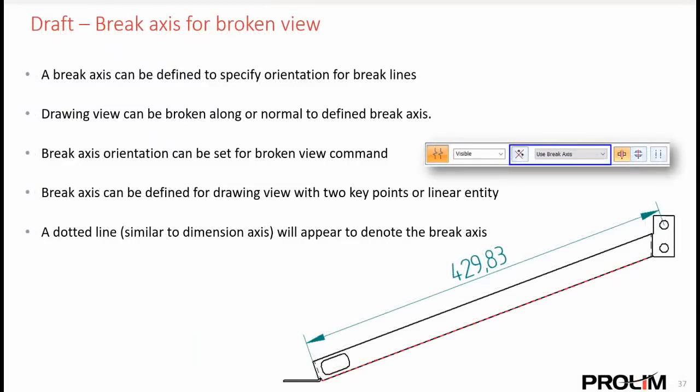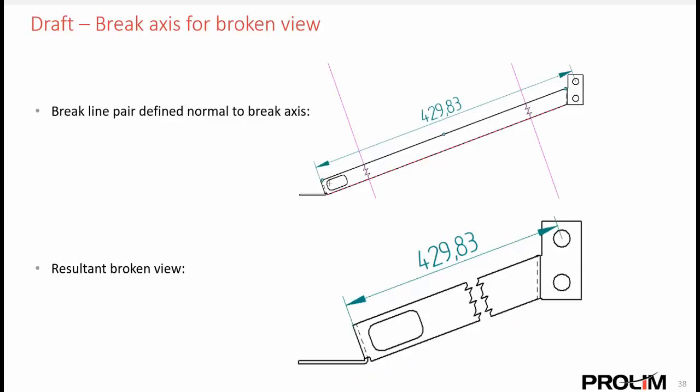New in the drafting environment is the option to define a brake axis for a broken view, which can be used to change the orientation of the brake lines. This can be set for the broken view command by using two key points or by selecting a linear entity, and a dotted line will appear to denote the angle of the brake axis. In the example, the brake line was defined along the bottom edge of the view, and once the broken view is applied we can see the result. This was another long-requested enhancement — you can now create a brake axis for a broken view.